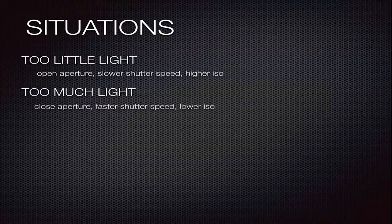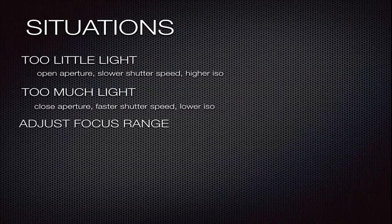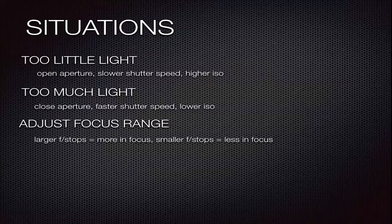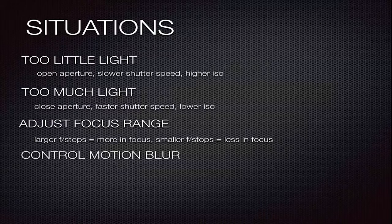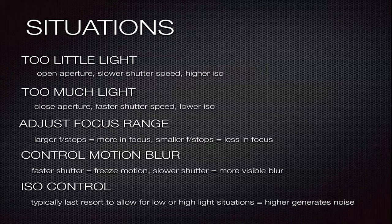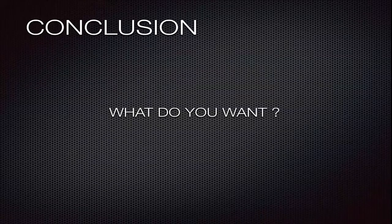If it's too bright and you're looking for a darker exposure, you can close the aperture, use a faster shutter speed, or use a lower ISO. If you want to adjust the focus range, larger f-stops give more in focus, smaller f-stops give less in focus. To control motion blur, faster shutter speeds freeze the motion, slower shutter speeds create more visible blur. ISO control is typically the last resort and will allow for low or high light situations, but raising ISO sensitivity generates noise. The conclusion is: what do you want? They're choices you have to make — they all have consequences on making a good exposure and getting your desired results.